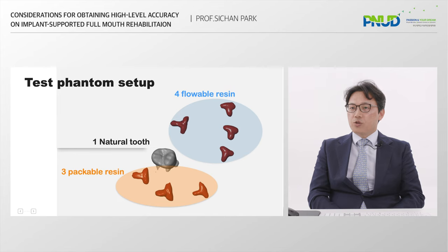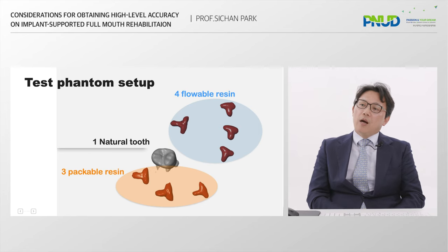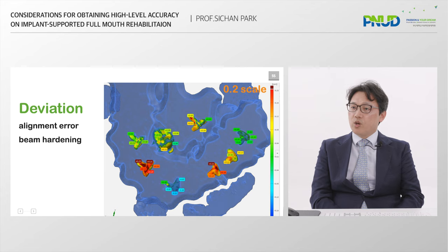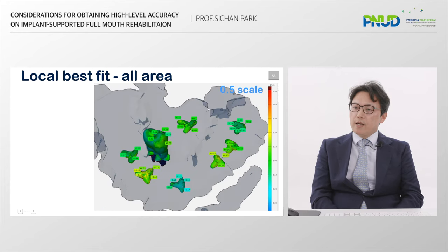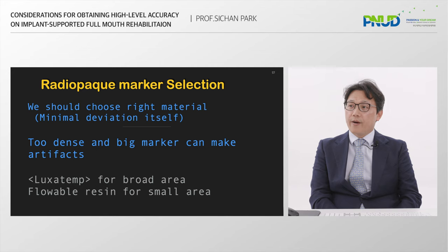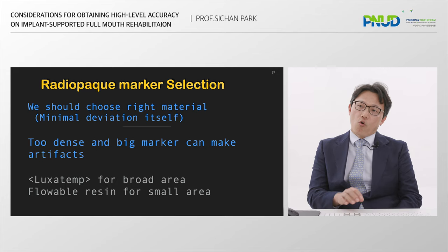Marker material can affect the result. I tested various resins — flowable resin, packable resin, and natural tooth — and inspected them after taking CBCT. There is a deviation from alignment error because a little beam hardening is generated from radiopaque materials. After taking some tests, you can select the proper one. In my experience, LuxaTemp is a very good marker for both broad and narrow areas. You can also use flowable resin for the marker.